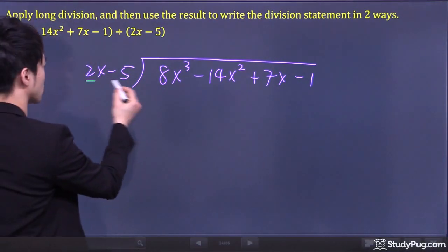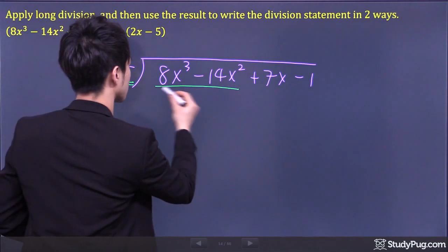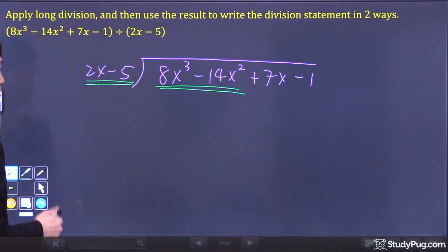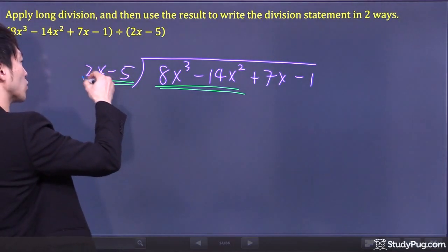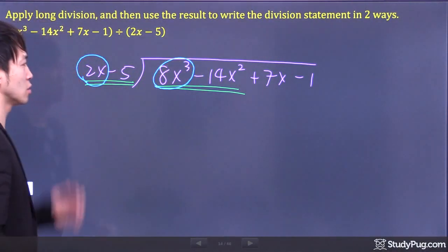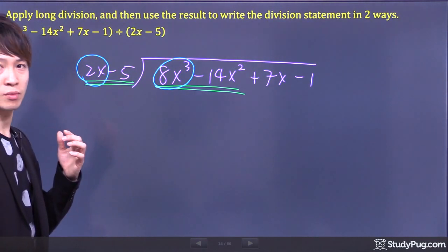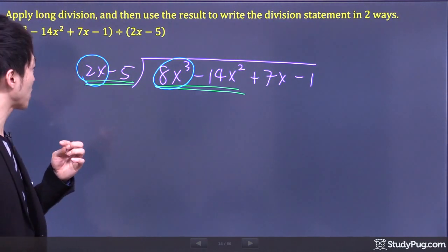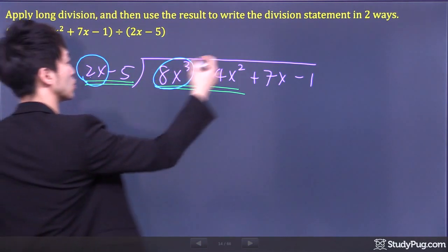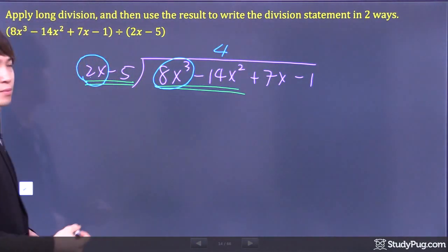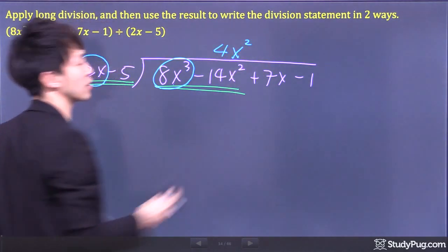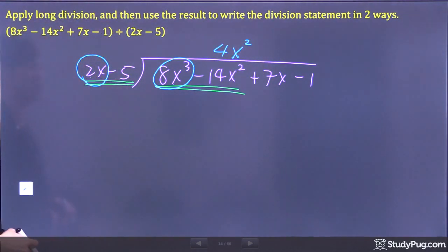Two terms, two terms. How do we get from 2x to 8x³? We have to multiply by what? From 2 to 8, we need to multiply by 4. From x to x³, we need to multiply by x². Simple as that.